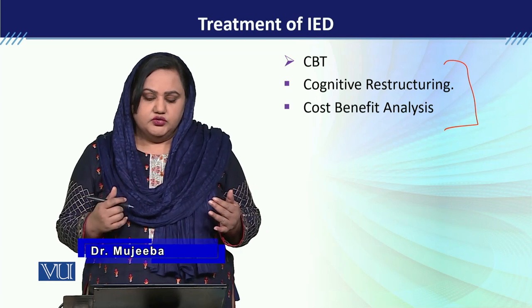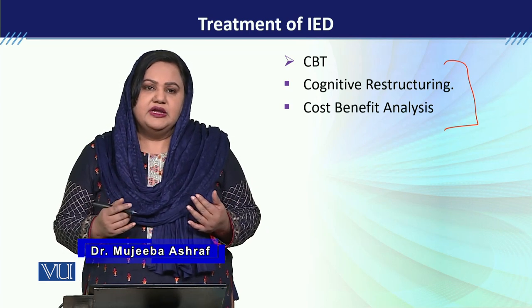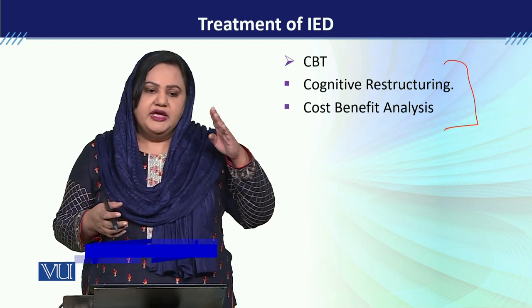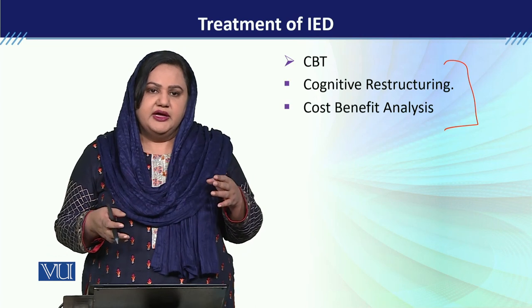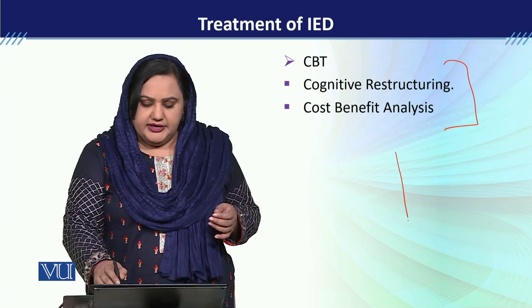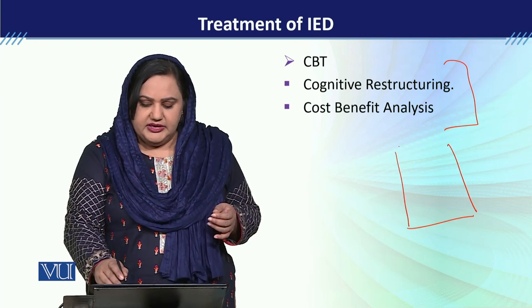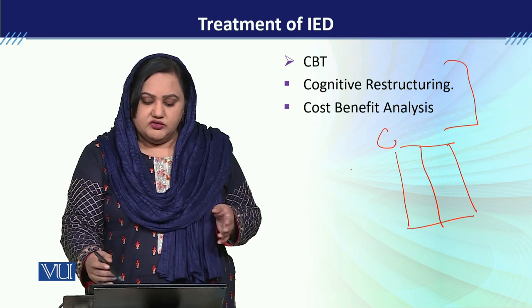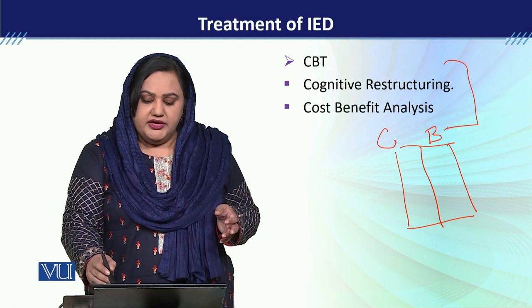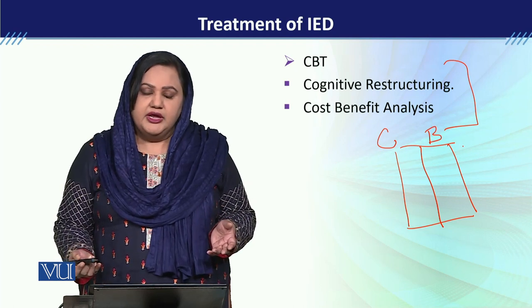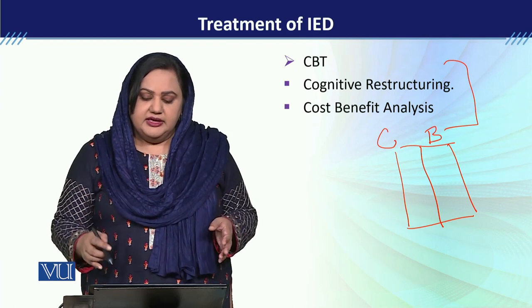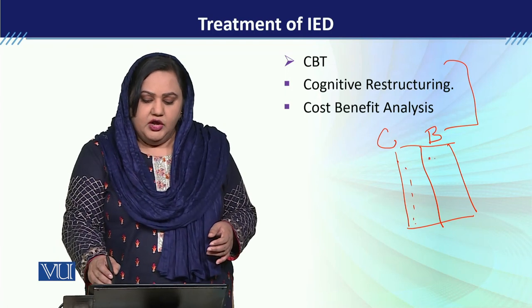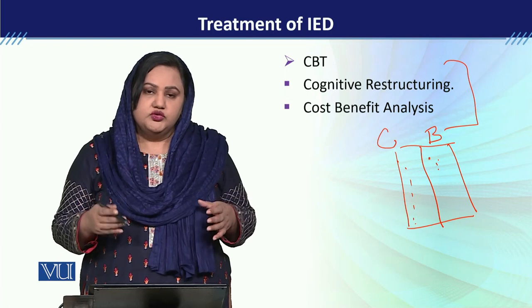Cost-Benefit Analysis میں یہ ہوتا ہے — we ask the child کہ جو behavior وہ exhibit کر رہا ہے وہ ایک chart draw کریں۔ اس طرح ایک طرف جو بھی behavior وہ کر رہا ہے اس کو cost کیا مل رہی ہے اور اس کا benefit کیا ہو رہا ہے۔ اگر وہ یہ دیکھے کہ جو behavior وہ exhibit کر رہا ہے اس کے costs زیادہ ہیں اور benefits کم ہیں۔